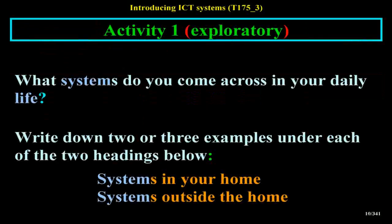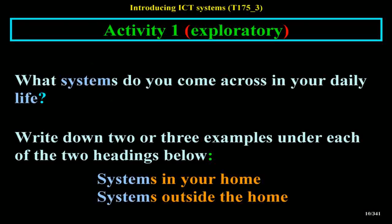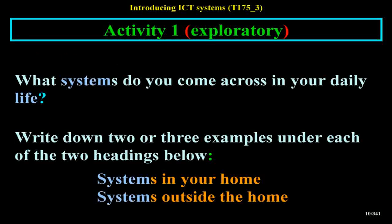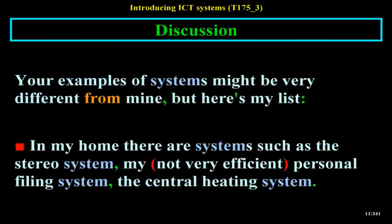Activity 1 Exploratory: What systems do you come across in your daily life? Write down two or three examples under each of the two headings: Systems in your home and Systems outside the home. Your examples of systems might be very different from mine, but here's my list.